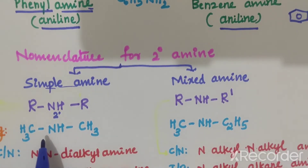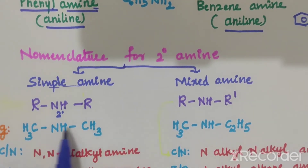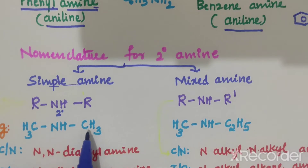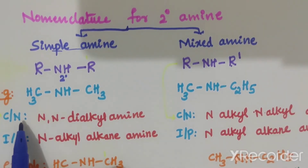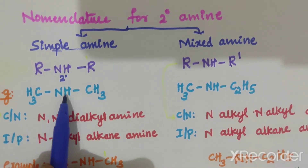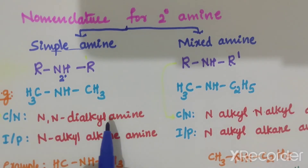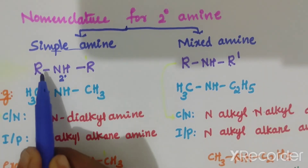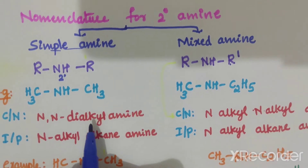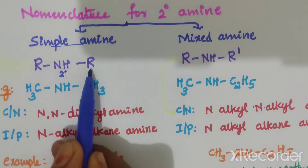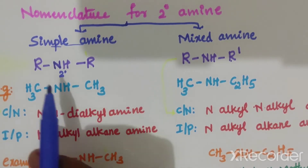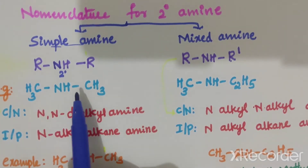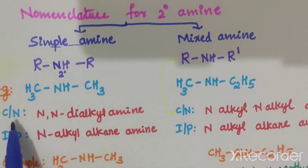For an example of simple amine, consider CH3-NH-CH3, where both groups are similar. The common name generalized nomenclature is N,N-dialkyl amine. These two R groups are alkyl groups, hence it is dialkyl. Two alkyl groups are present, hence it is dialkyl amine. NH is here, so we write amine.